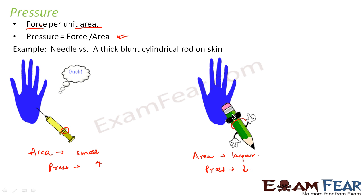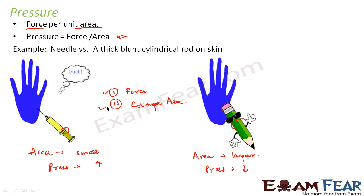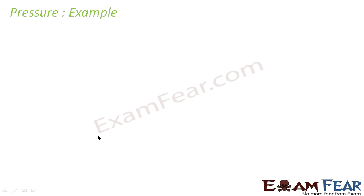Pressure was less means the pain which you feel is also less. So we observe that the two important factors which decide pressure are force and coverage area. These are the two factors which determine the magnitude of pressure. We conclude that greater is the force, greater is the pressure; greater is the coverage area, lesser is the pressure.